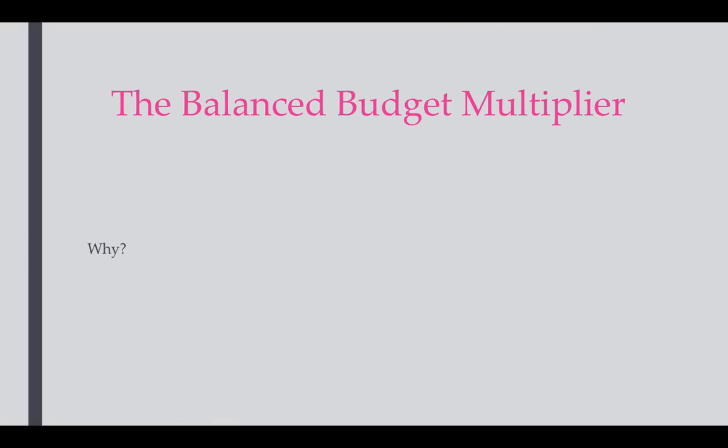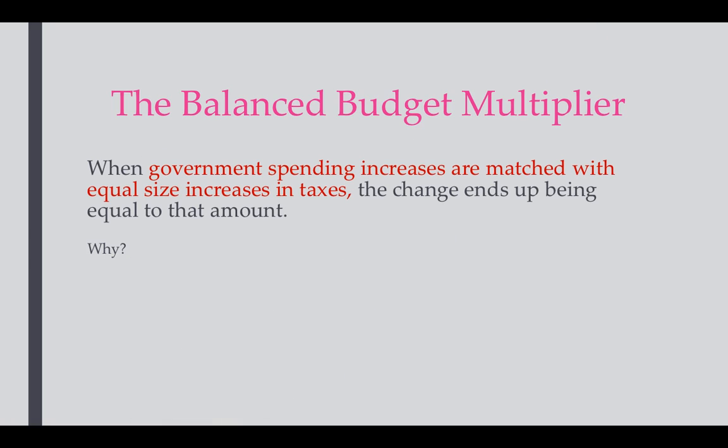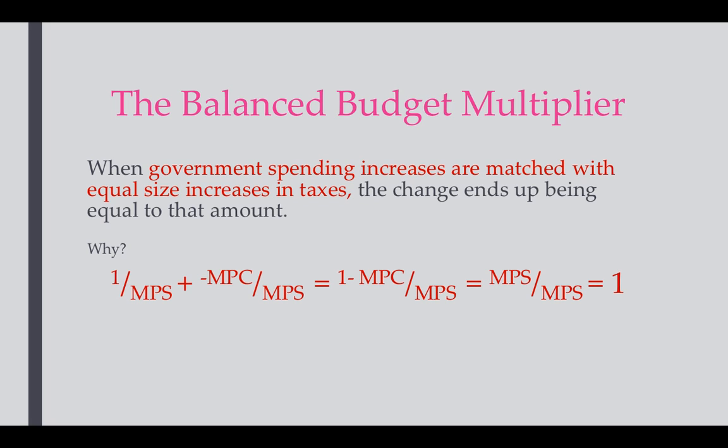The last multiplier is the balanced budget multiplier. When government spending is matched with the same amount of taxes, the change in GDP ends up equal to the amount of the spending and tax increase. So if the government increases spending by $30 billion and increases taxes by $30 billion, $30 billion is added to GDP. This works because the spending multiplier plus the tax multiplier equals: (1/MPS) + (−MPC/MPS) = (1 − MPC)/MPS = MPS/MPS = 1. So whatever the spending amount is, multiply it by 1 — and we'll work through examples in class tomorrow.